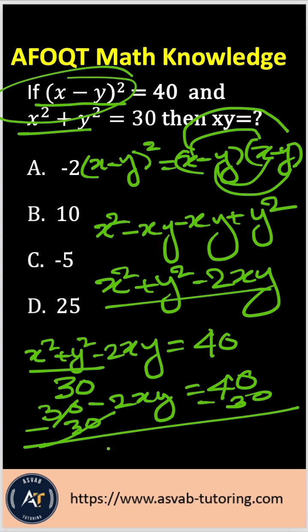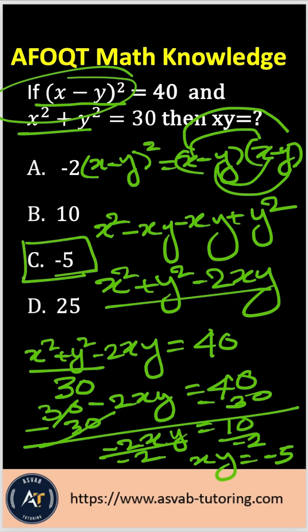Cancel, cancel, so that gives you negative 2xy equals 10. Divide both sides by negative 2, that gives you xy equal to negative 5. So the answer option is option C.